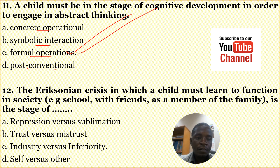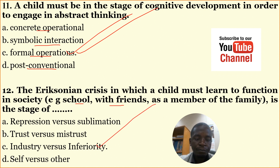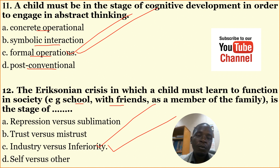Number twelve: The Eriksonian crisis in which a child must learn to function in society — for example, with friends or as a member of the family — is the stage of — A: depression versus sublimation, B: trust versus mistrust, C: industry versus inferiority, D: self vs. other. The correct answer is C: industry versus inferiority. When a child is under this stage, he or she is learning how to function within a community, with friends, or within the school setting.